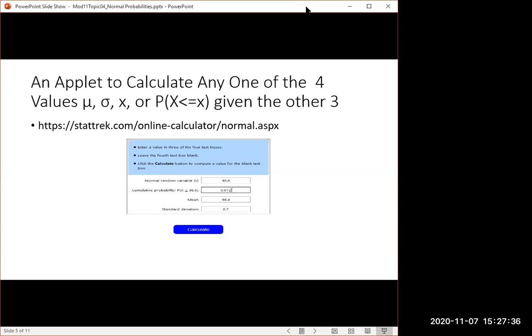But I can do this leaving any one of the spaces blank. So let's say I don't know the standard deviation, but somehow I know that 51% of the people, so I need to type 0.51. Let's say I know that 51% of the people have a temperature below 98.6. And I think that the mean is 98.4. So the missing piece of information is the standard deviation.